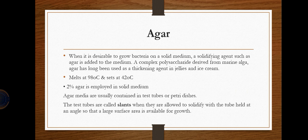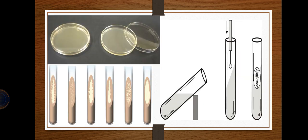Agar is put into test tubes or petri dishes. Test tubes containing agar are called slants — the agar is held at an angle to provide more surface area for growth. In a petri dish the agar medium is poured flat, and growth can be observed on the surface.